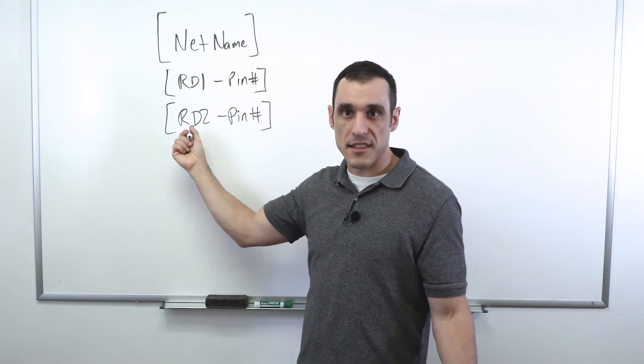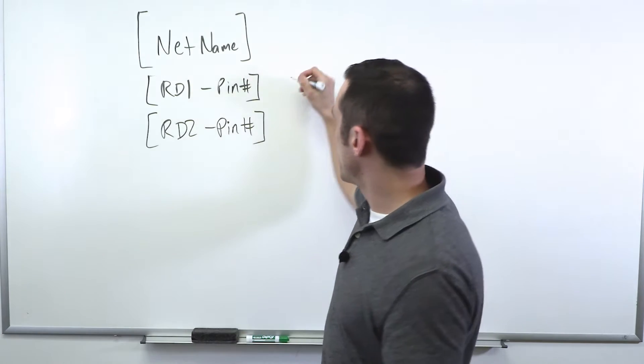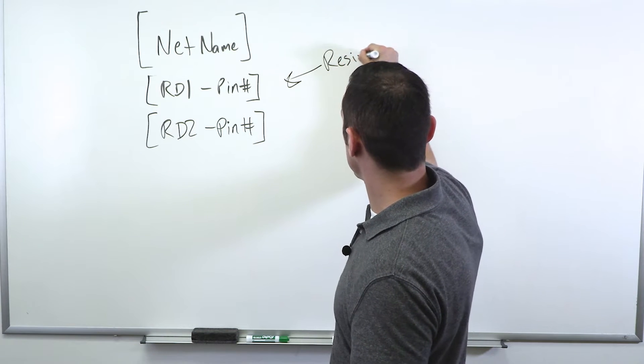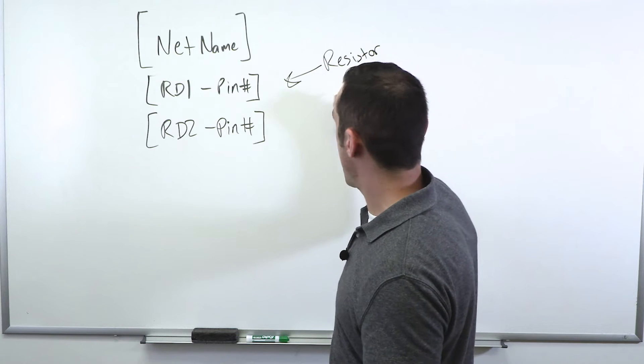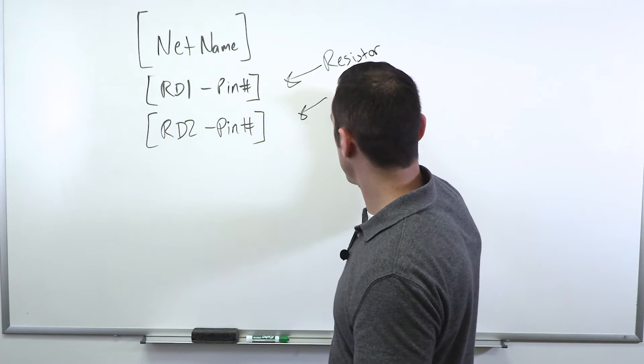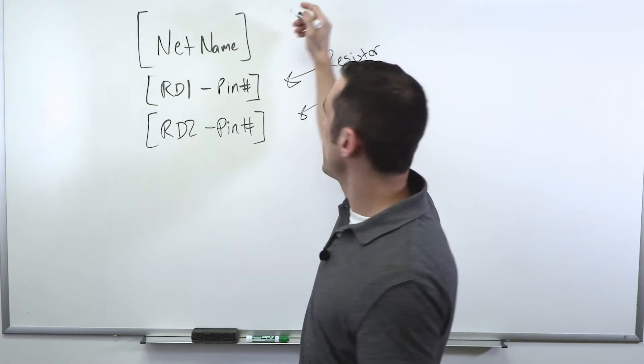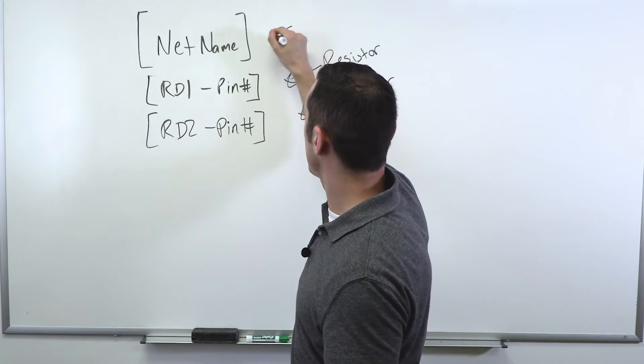So this could be, for example, this could be a resistor and this could be the input pin on a capacitor. And my net name, let's just say as an example, we'll call it net RC.